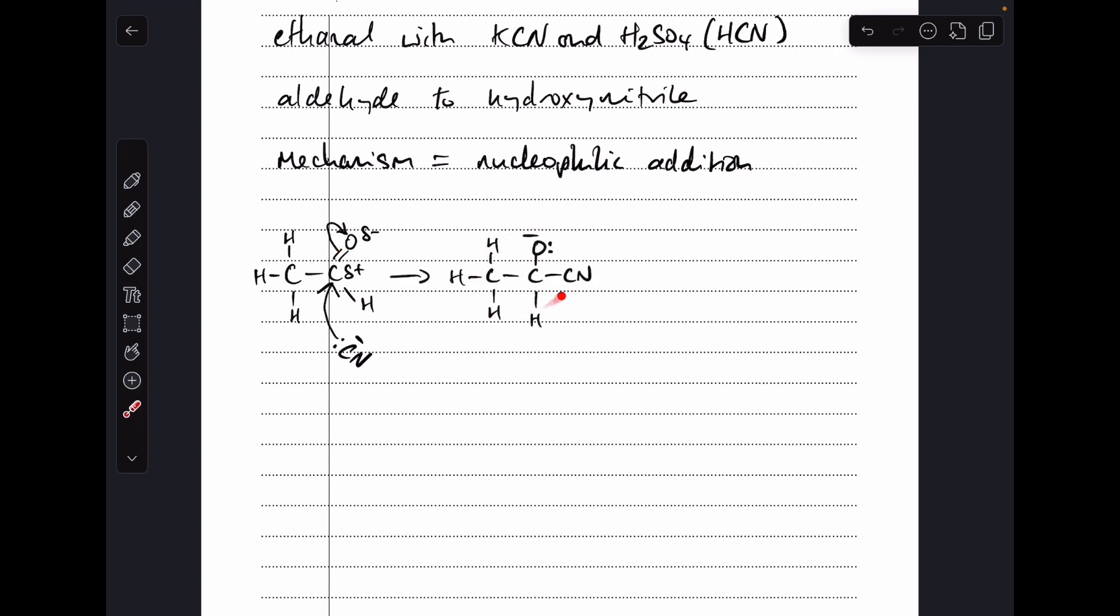So that's going to give us this intermediate here. So we've just got the sigma bond now between the carbon and the oxygen. We show a negative charge and a pair of electrons on that oxygen, and then we take the H plus ion from the HCN, and we take a curly arrow from the lone pair on the oxygen onto the H plus, which gives us our product, 2-hydroxypropanenitrile.